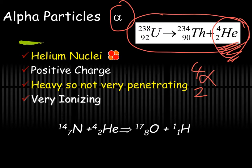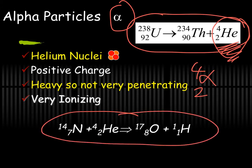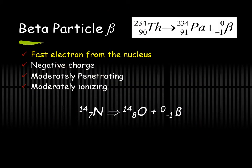You can also bombard things with alpha particles to change elements. For example, an alpha particle hitting a nitrogen-14 nucleus: the nucleus absorbs the alpha and turns into oxygen-17, while also releasing a proton — written as H, because a proton and the nucleus of hydrogen are exactly the same thing.